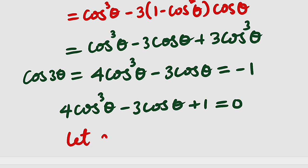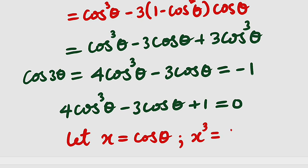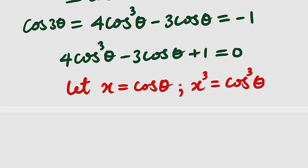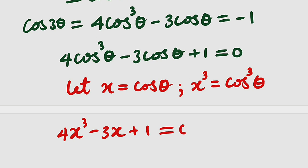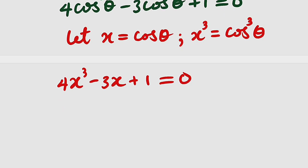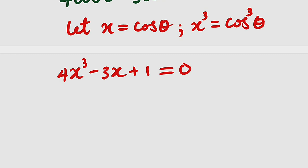Let x equal cosine theta. Substituting, this becomes 4x cubed minus 3x plus 1 equal to 0. This is a cubic equation — how can we factorize it?